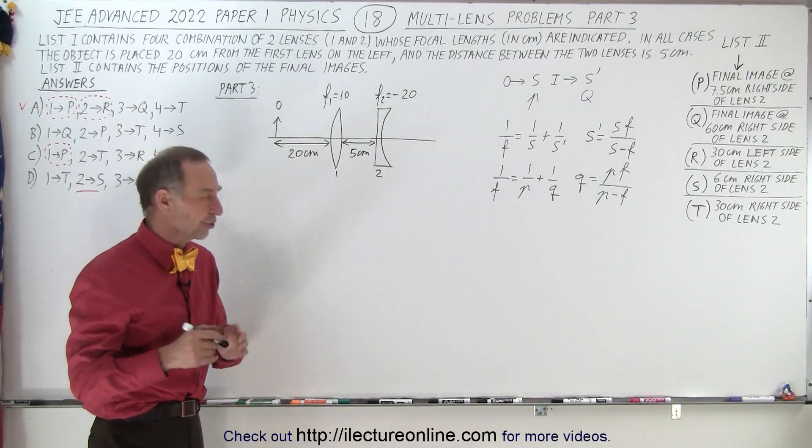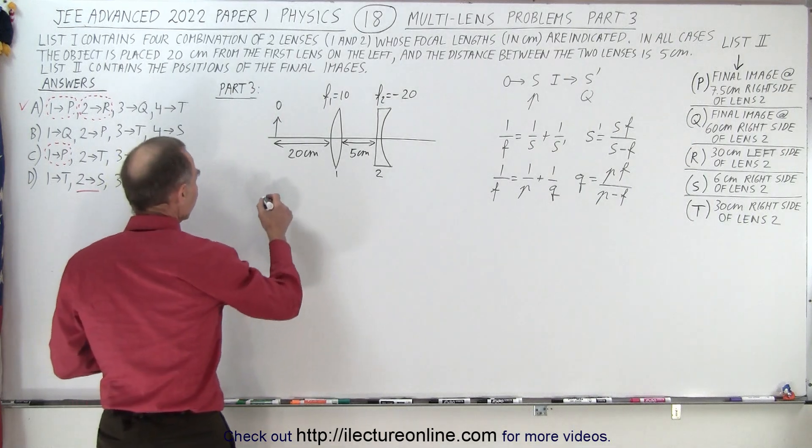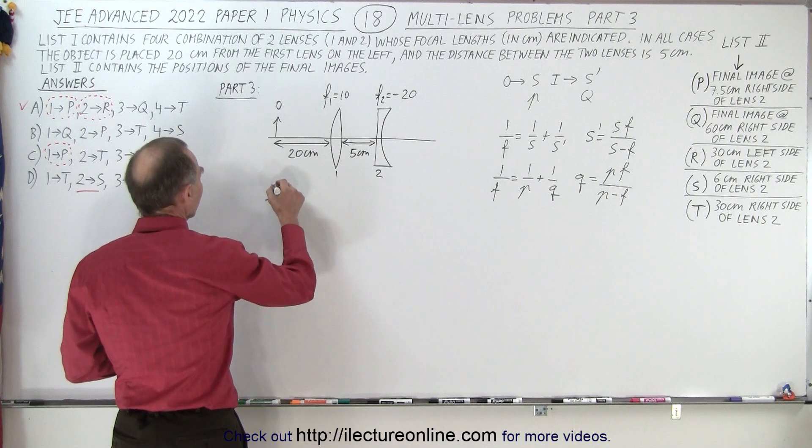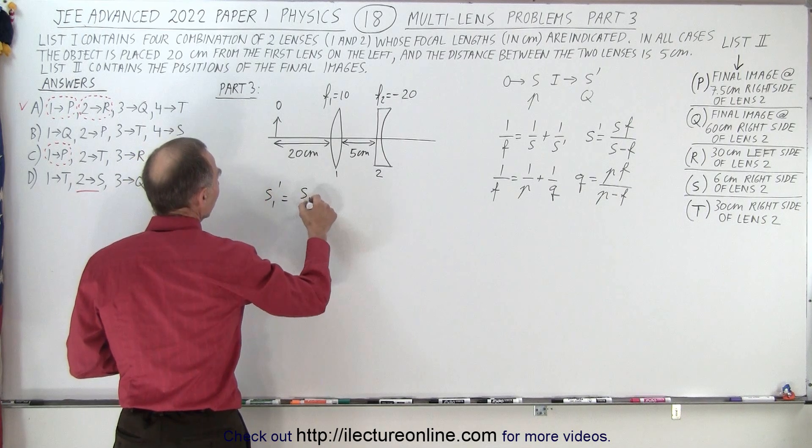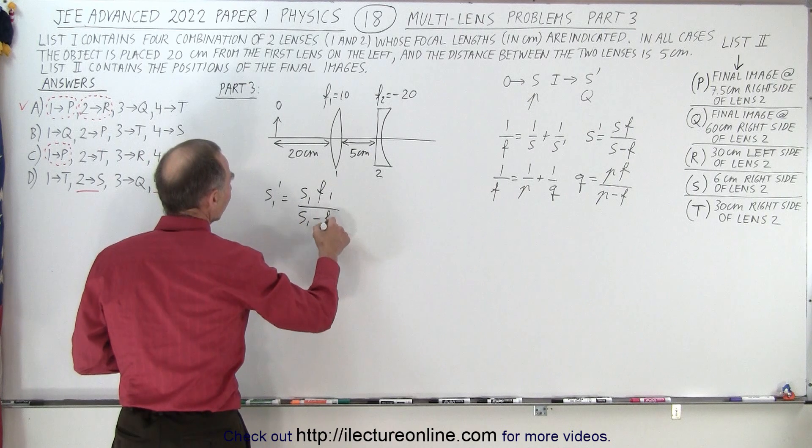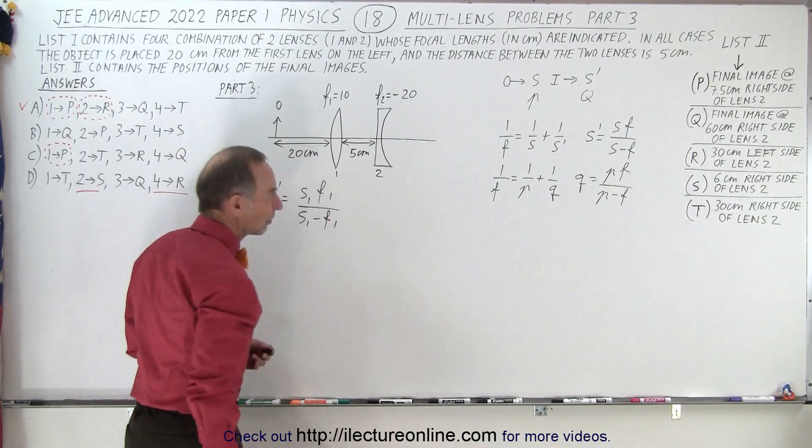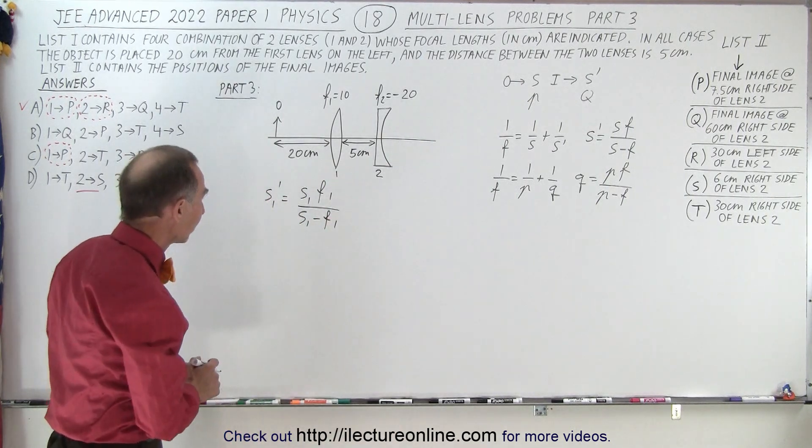But first we need to find the first image. The first image can be found by saying S1' is equal to S1 F1 divided by S1 minus F1. Of course that comes from simplifying the original lens equation.